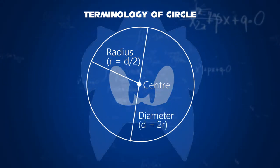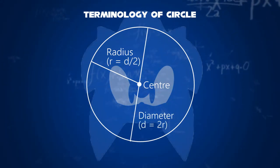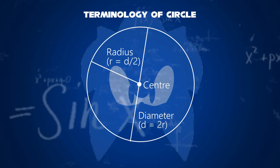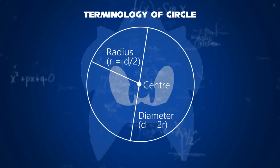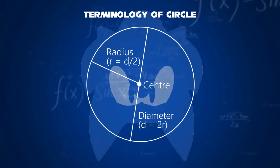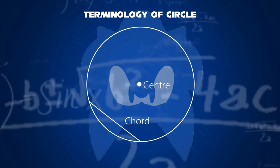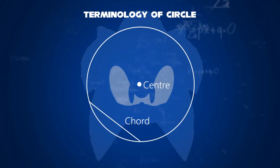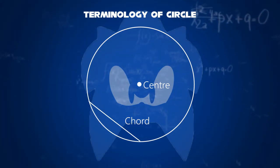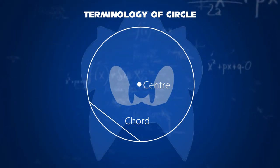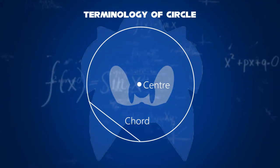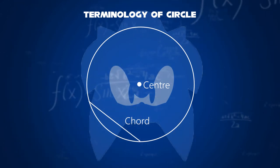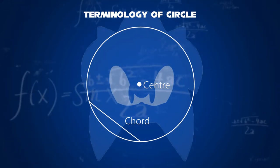Thirdly, if another radius is drawn straight from the first radius, it is called a diameter of the circle. Fourthly, if it is much less than its diameter, a line segment whose endpoints lie on the circle, thus dividing a circle into two segments — this is called a chord.